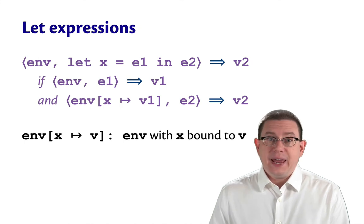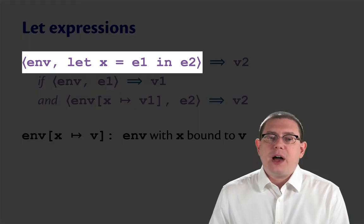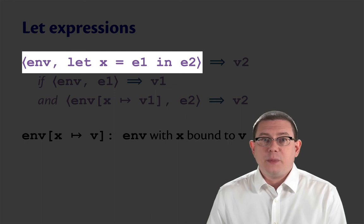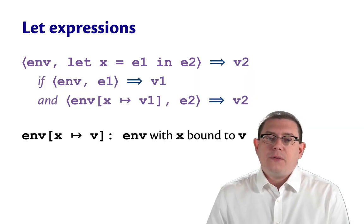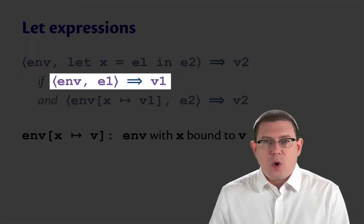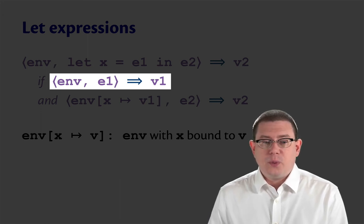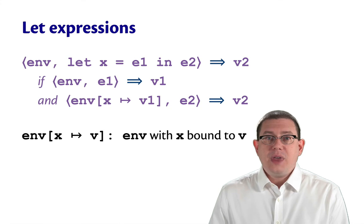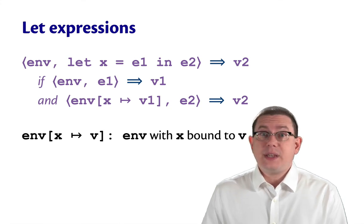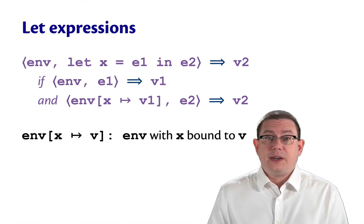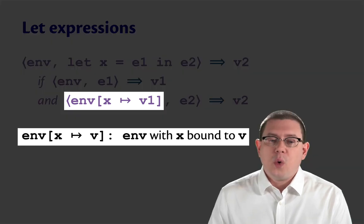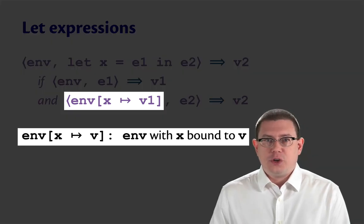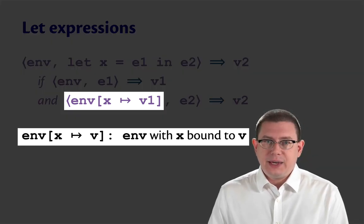For let expressions, if we want to evaluate let x equal e1 and e2 in an environment env, well first we will evaluate e1 in that same dynamic environment to a value v1. Then instead of doing a substitution of v1 inside of e2, we will record what x should be. So we'll take the environment env and we will bind x to v1 in it.